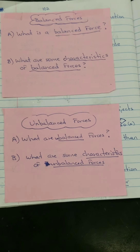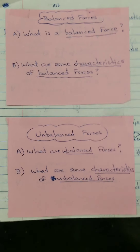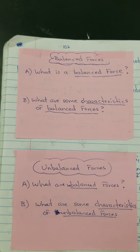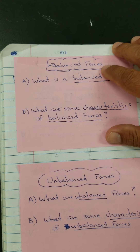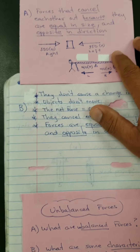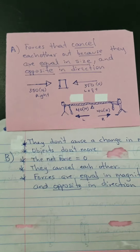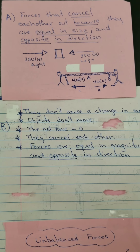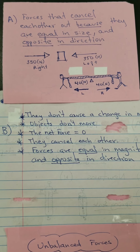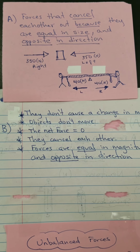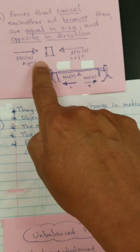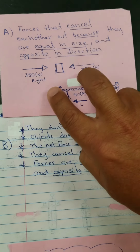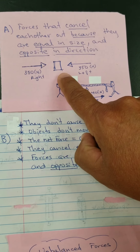On this page — page 102 — we're talking about balanced forces. What is a balanced force and what are some characteristics? A balanced force is when forces cancel each other out because the forces are equal in size but opposite in direction. That example shows the same amount of force going in opposite directions — they cancel each other out, and the box is not going to move.